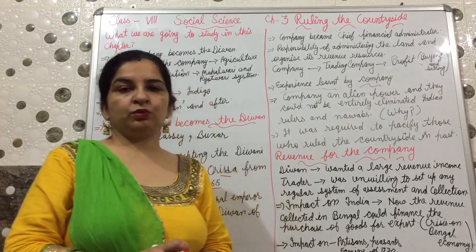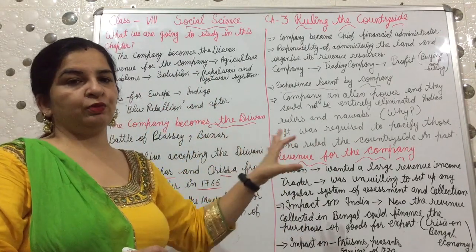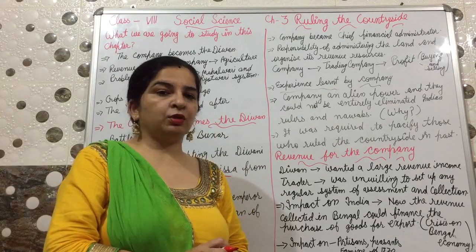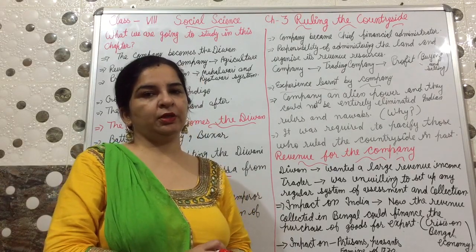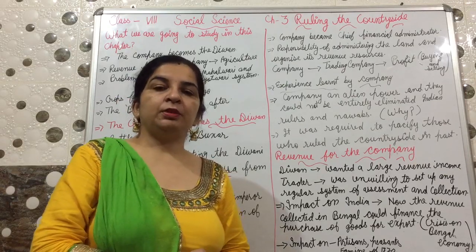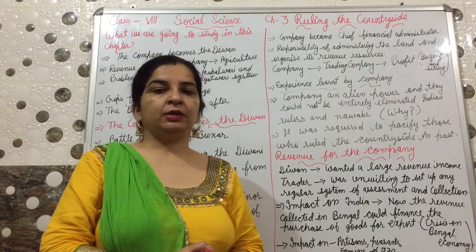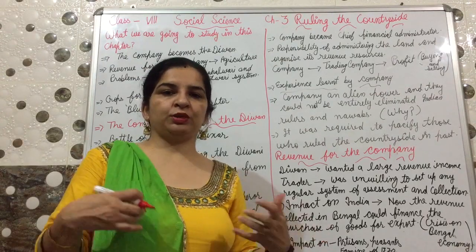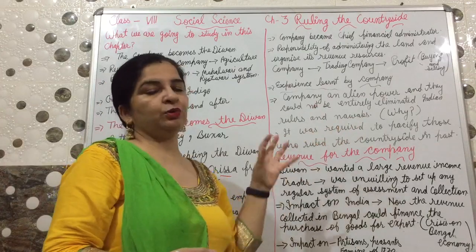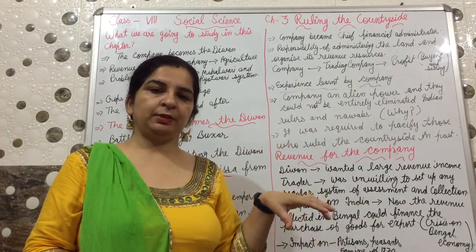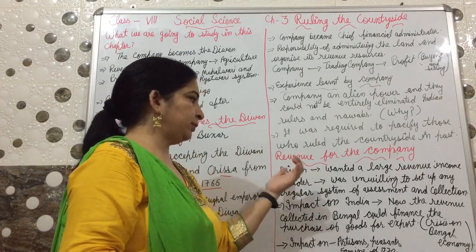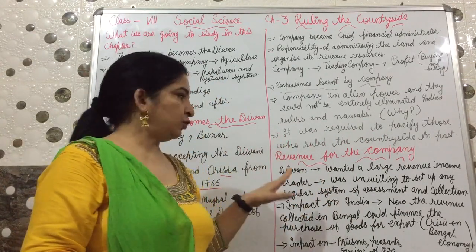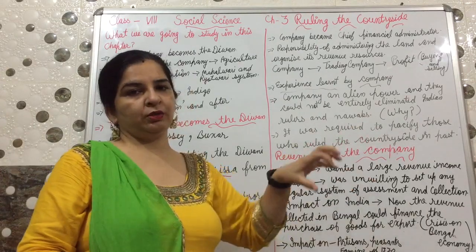Next, revenue for the company. After getting the Diwani right, how did the company get revenue? The company got the Diwani right because the British knew very well that after becoming the Diwan they could easily collect the taxes. Diwani means the tax collection right — whether from agriculture or from industries. The first thing was that the Britishers became the Diwan and wanted a large revenue income. They became the Diwan because they wanted large revenue income.